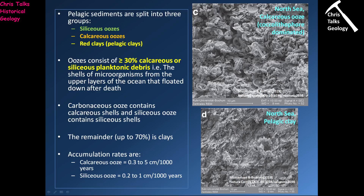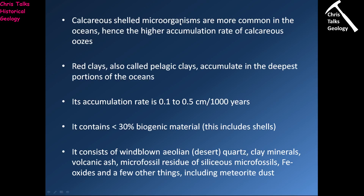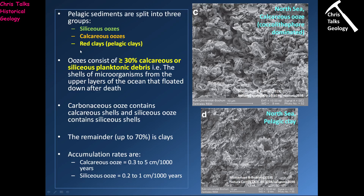Pelagic clays are obviously dominated by clay-sized material. In contrast, calcareous oozes and siliceous oozes will have a significant component of shelly material mixed in — though these shells are going to be tiny, microscopic structures, not the kind you can really see with the naked eye. Calcareous shell organisms on the whole are more common in the oceans, which explains the higher accumulation rate. In terms of more silica-rich organisms, they tend to prefer colder water, so you tend to get more siliceous oozes towards the poles.